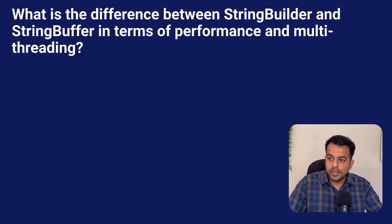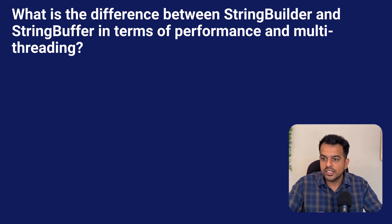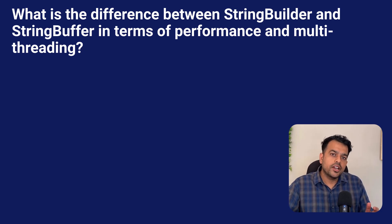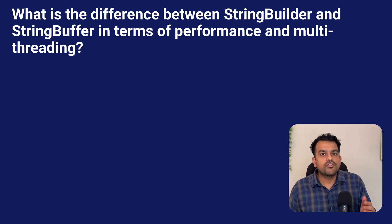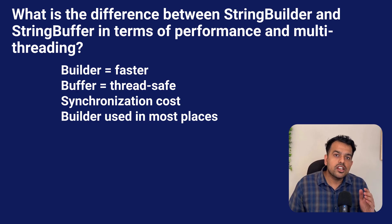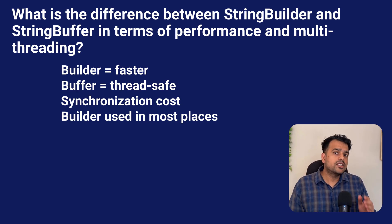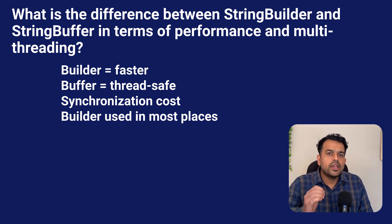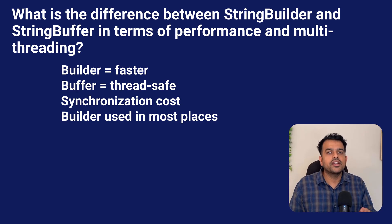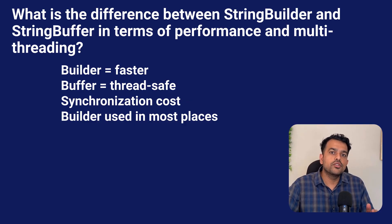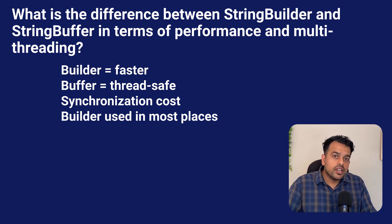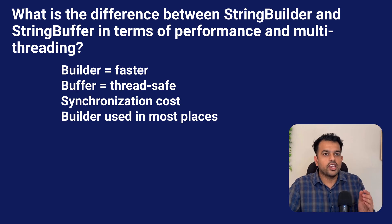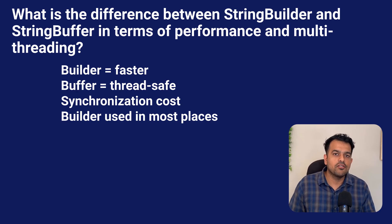The next question is: what is the difference between StringBuilder and StringBuffer in terms of performance and multi-threading? Both are mutable alternatives to String but they behave very differently. StringBuilder is faster because it has no synchronization. StringBuffer is thread-safe because every method is synchronized, but this thread safety comes with a performance cost, especially inside loops. For 90% of cases, especially in backend code, StringBuilder is enough. StringBuffer only makes sense when multiple threads modify the same string object, which is very rare in modern design. Nowadays if you really need thread-safe string manipulation, people prefer other patterns instead of StringBuffer. If you ever see StringBuffer in production code, it's usually legacy code or someone misunderstood thread safety.